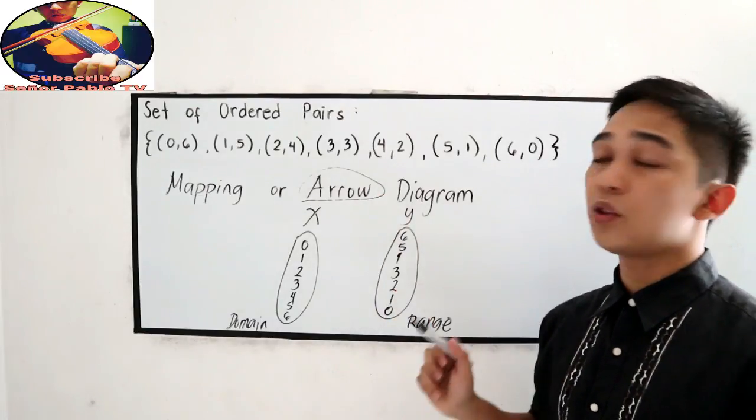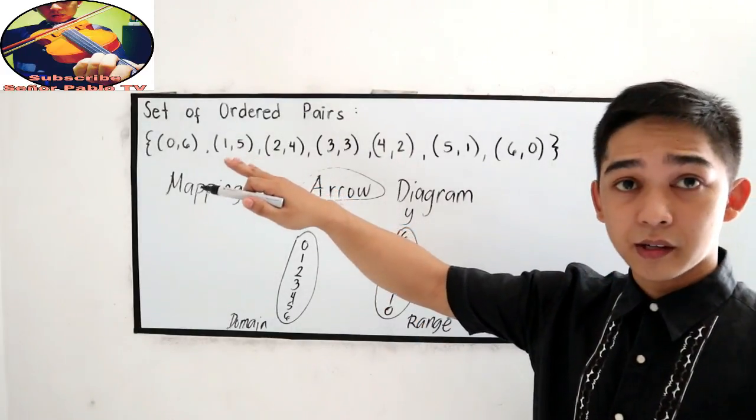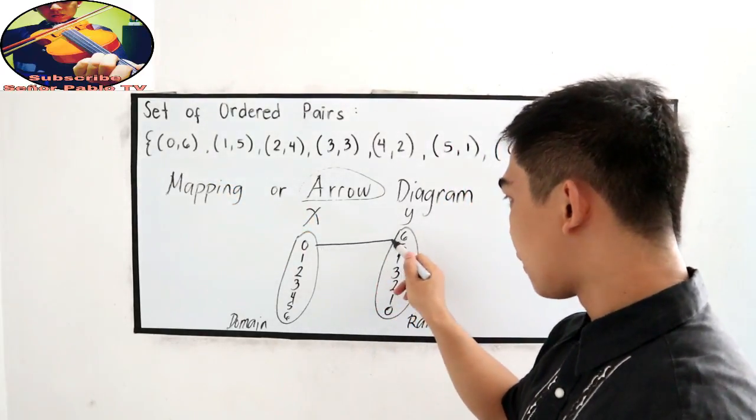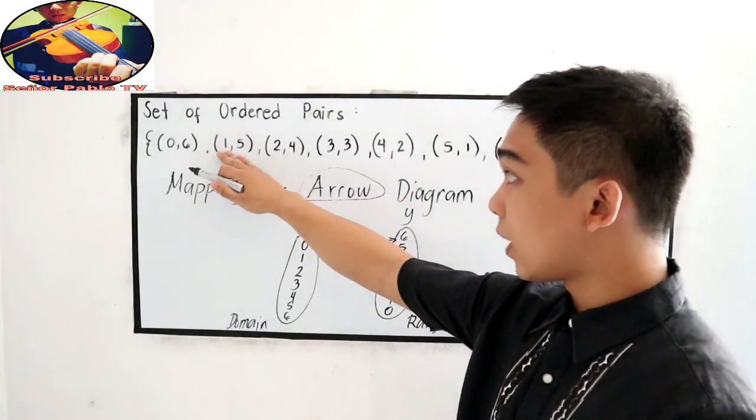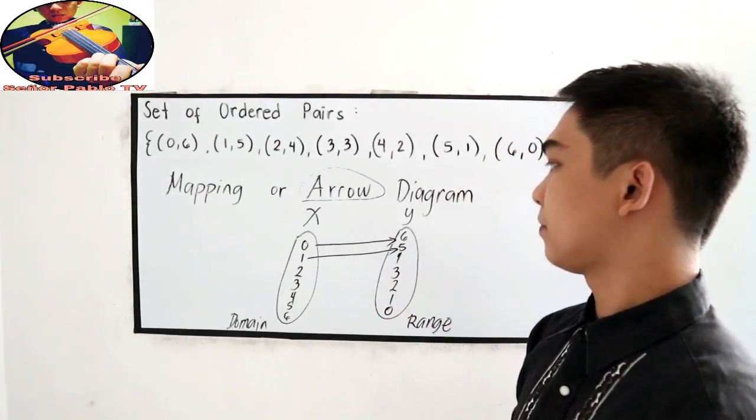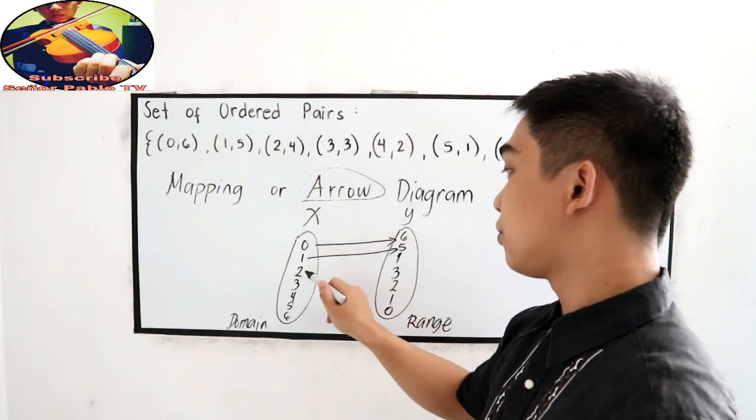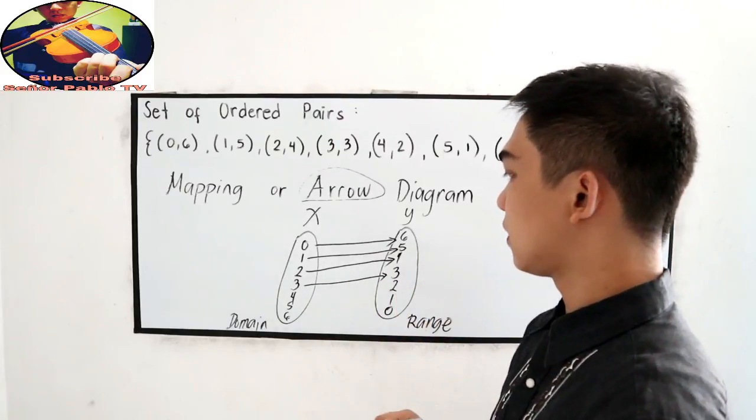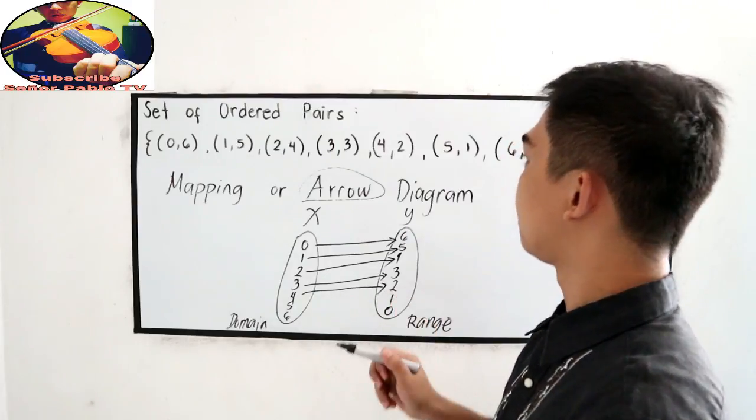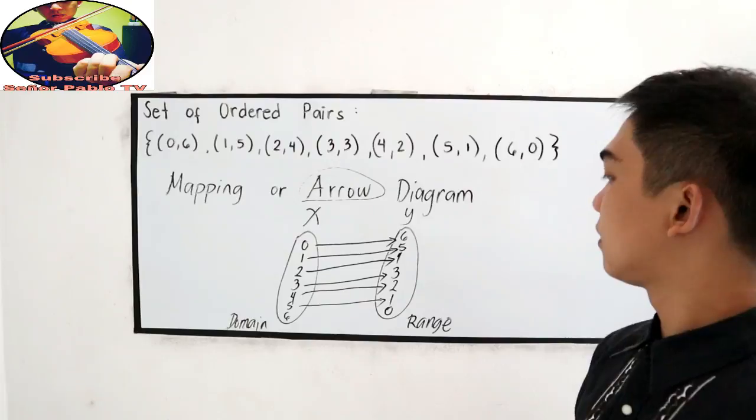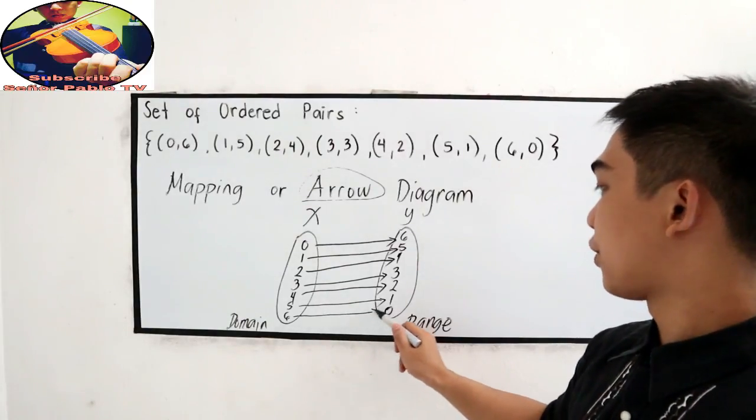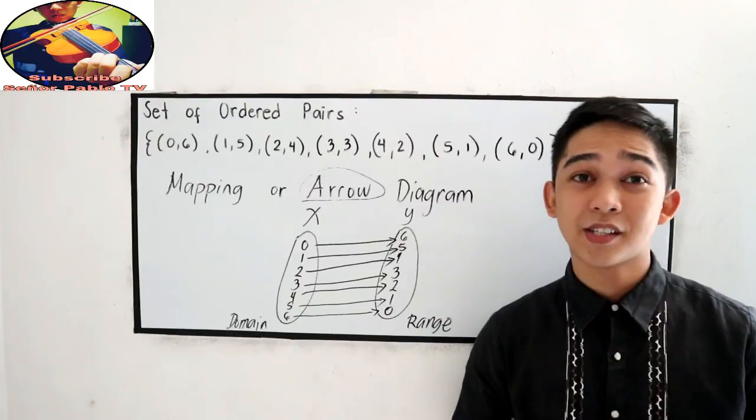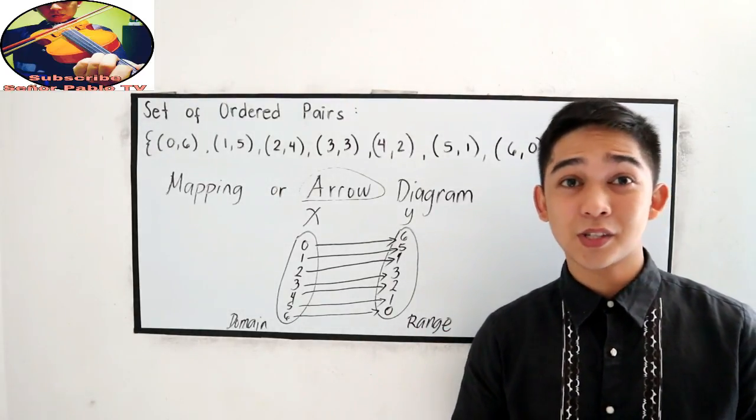So, we have arrow, so we need to draw an arrow using our ordered pairs. Our first pair is 0, 6. Second, 1, 5. Next, 2, 4. 3, 3. 4 going to 2, and 5 going to 1, and 6, 0. So, that is our mapping or arrow diagram. Our second way in writing our relations. Let us proceed in the third one.